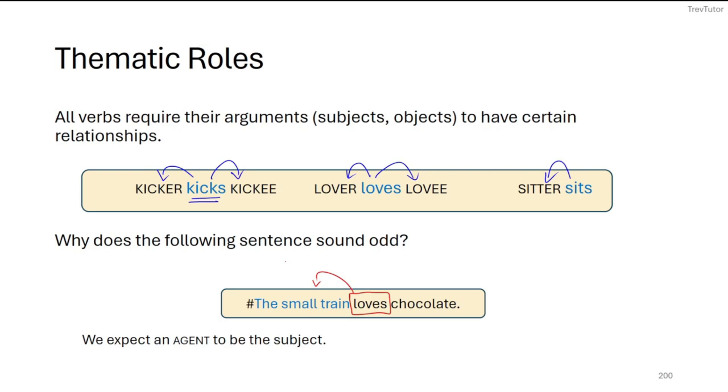So we don't want to say it's ungrammatical because it follows all of our syntactic rules. But we do want to say that there's some weird semantic violation happening here. And that's because we expect a certain type of subject to exist.